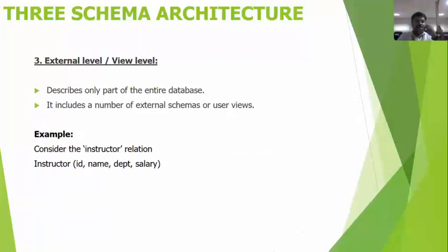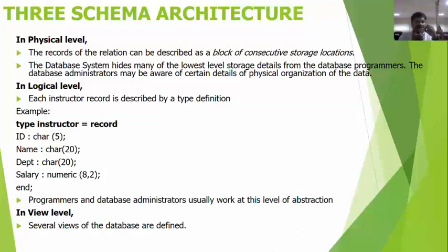The external view describes only part of the entire database and includes a number of external schemas or user schemas. Consider an example: the instructor relation is a table containing attributes of id, name, department, and salary. At the physical level, the record can be described as a block of consecutive storage locations. At the logical level, the record is described by type definitions: id is a character of length 5, name is a character of length 20, department is a character of length 20, and salary is numeric with 8 digits and 2 decimal points. Programmers and database administrators usually work at the logical level.